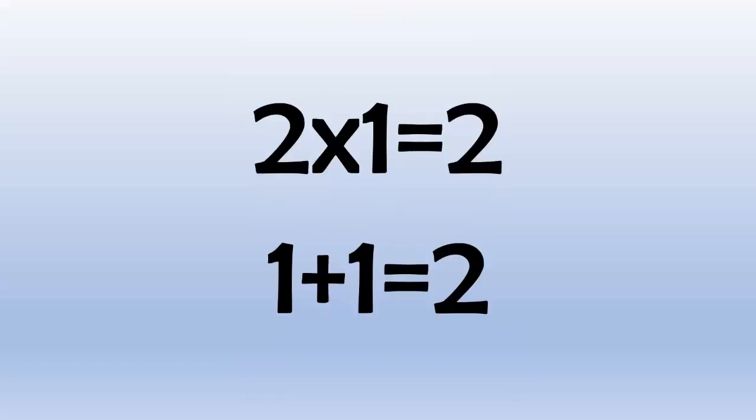2 times 1 equals 2, because 1 plus 1 equals 2. 2 times 2 equals 4, because 2 plus 2 equals 4. 2 times 3 equals 6, because 3 plus 3 equals 6.